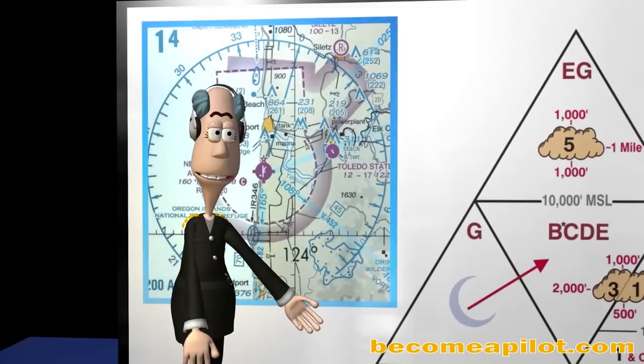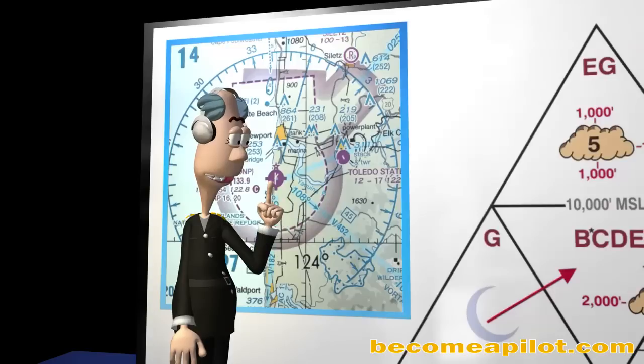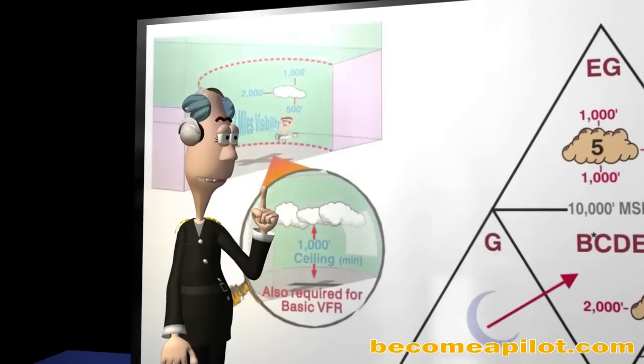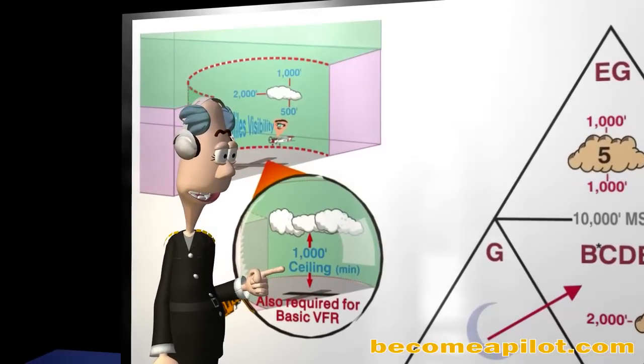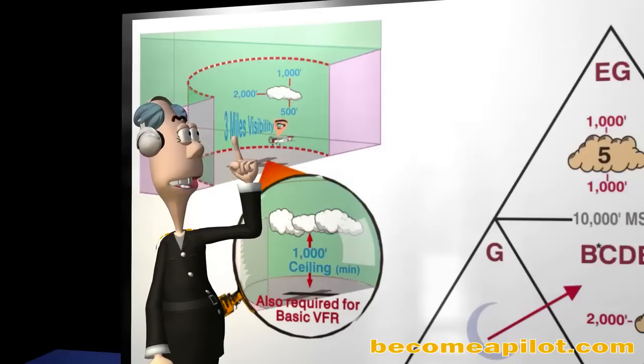Second, if Class B, C, D, or E airspace touches the surface surrounding an airport, an additional cloud clearance requirement must be met. You must have a 1,000-foot ceiling in addition to the required 3 miles visibility for basic VFR flight underneath that ceiling.